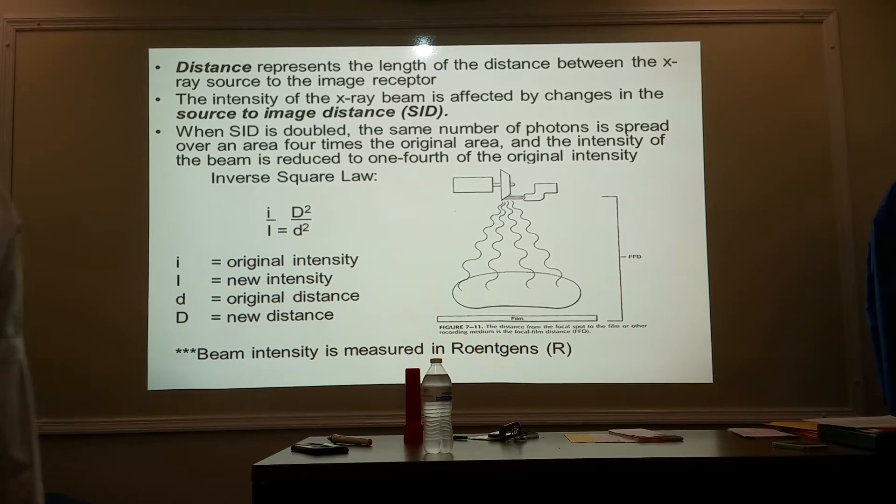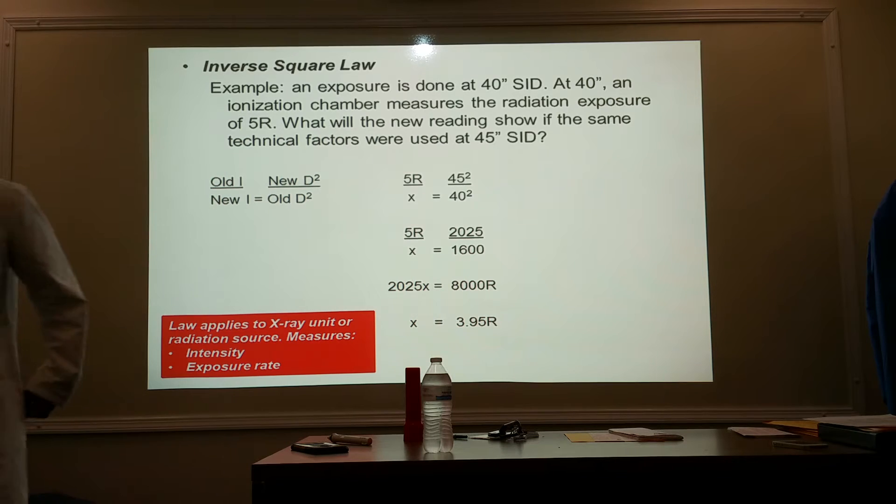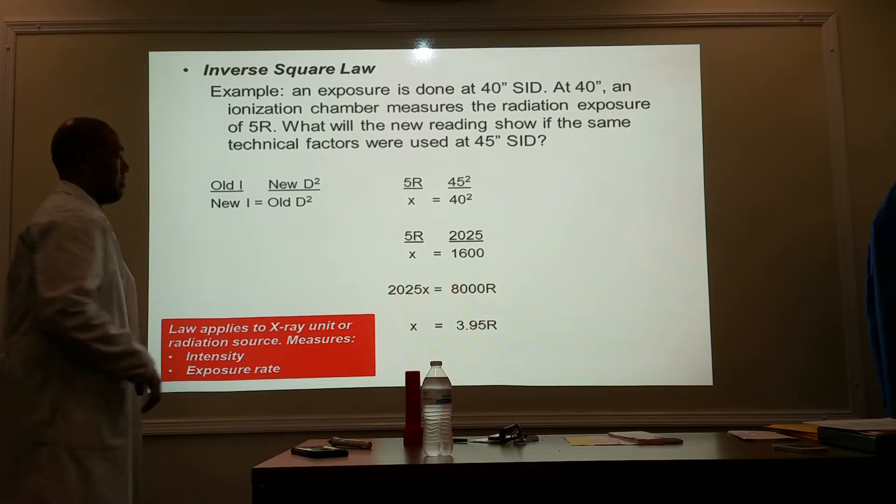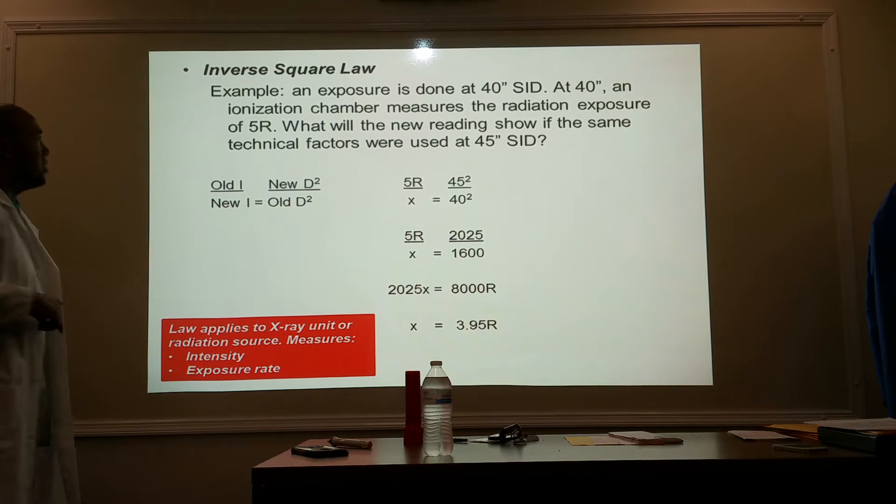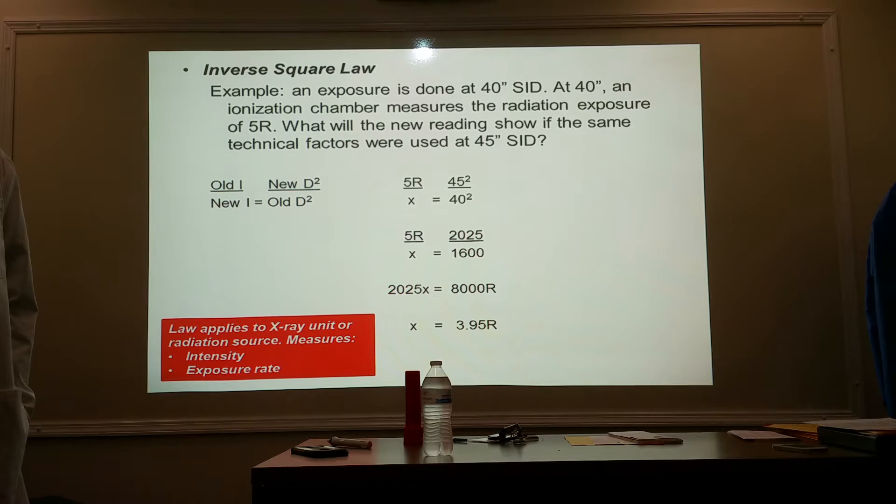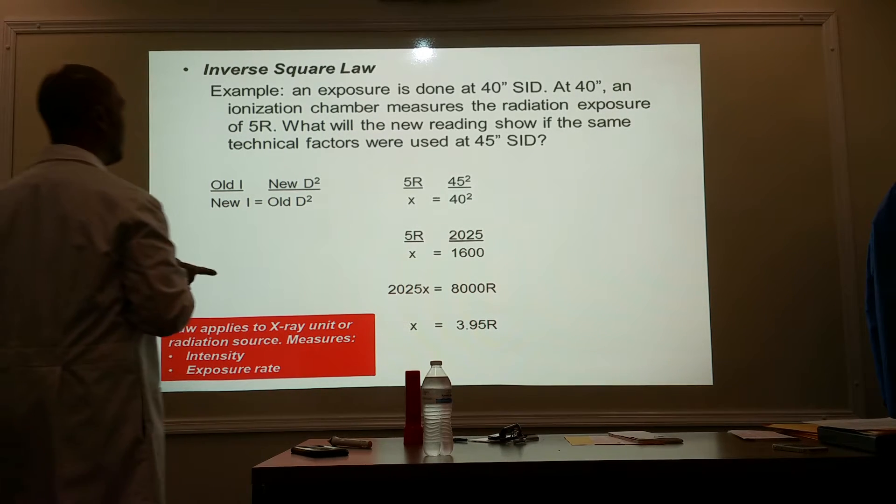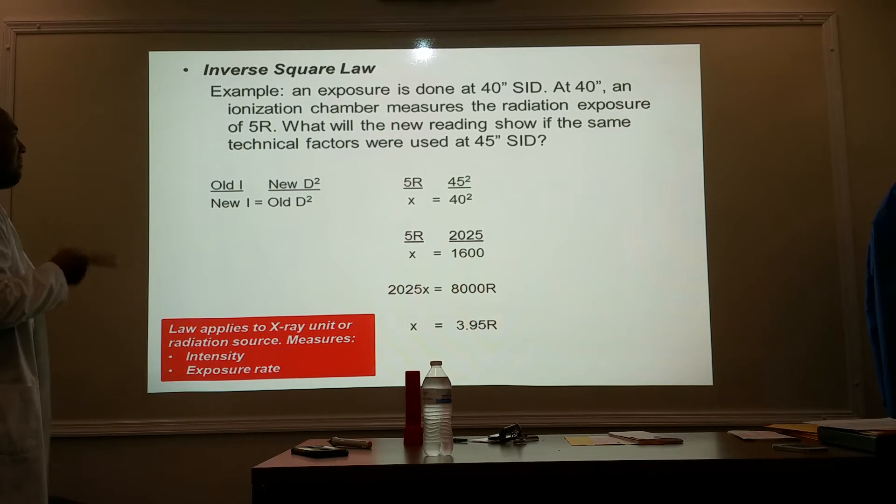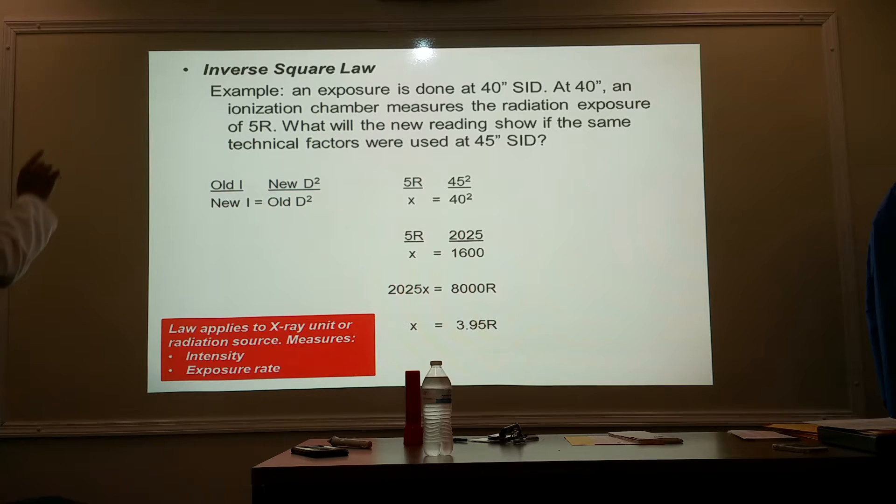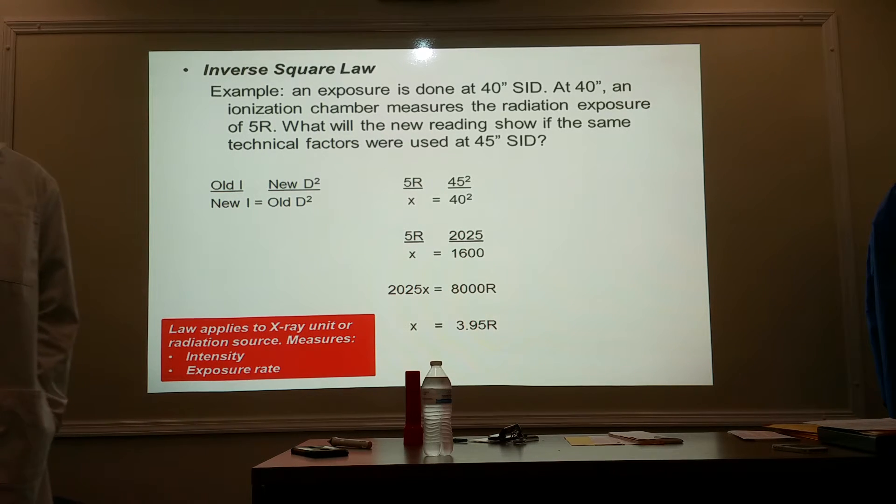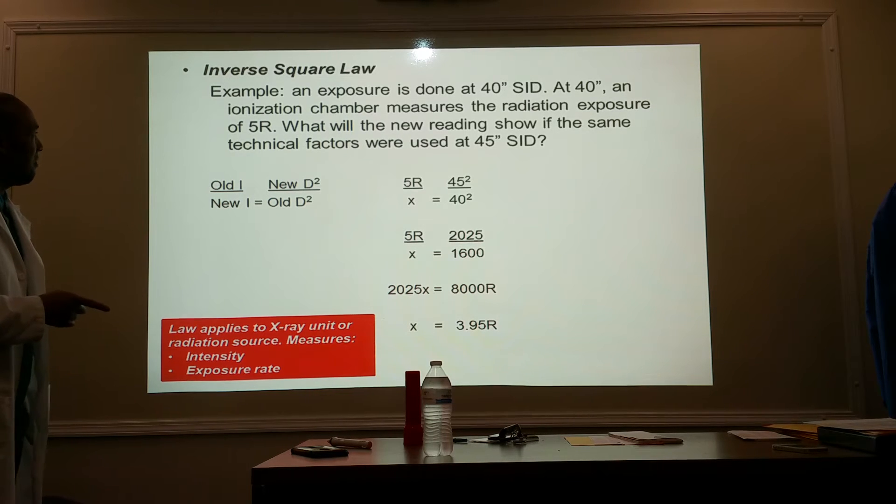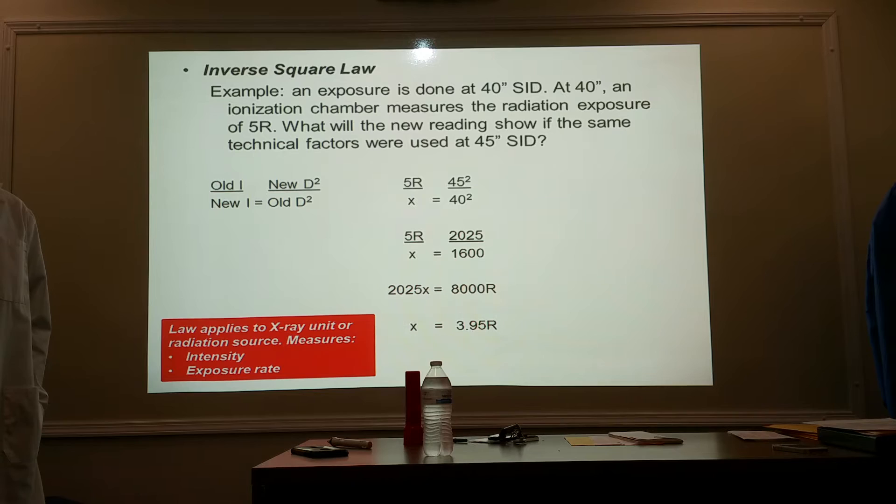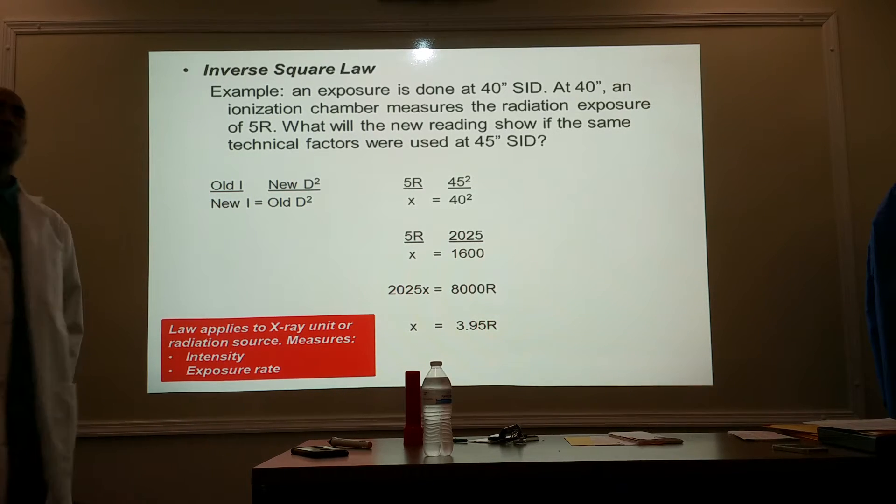Let's apply this to a real situation. Here's the inverse square law. An exposure is done at 40 inches SID. What's SID? Source to image distance. The distance from the X-ray tube to the image receptor. An exposure is done at 40 inch SID. At 40 inches, an ionization chamber measures the radiation exposure of 5R. So at 40 inches, we've got a Geiger counter, and it's measuring 5R coming from that radiation source, 5 Roentgens. What will the new reading show me if the same technical factors were used, the same amount of energy was being emitted, however, at a further distance of 45 inches.